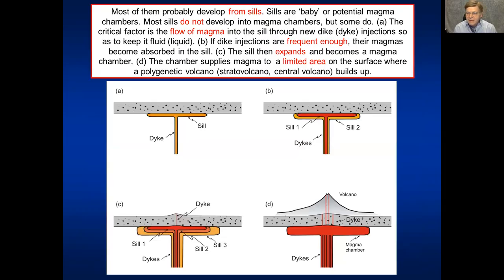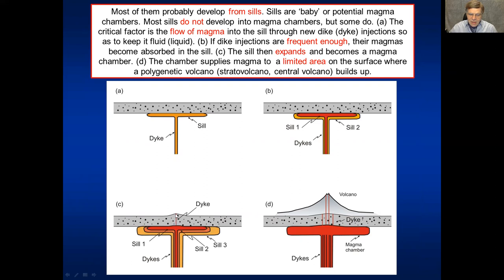I think most of them form from sills. Sills are sort of baby or potential shallow magma chambers. Most sills of course do not become magma chambers, but quite many do, and the critical factor is the flow of magma into the sill once it has been emplaced through new dike injections. If the sill then receives magma from new dike injections it can grow and expand into a real shallow magma chamber, which subsequently starts to inject dikes and probably inclined sheets that bring magma to a limited surface area. This limited surface area becomes the polygenetic volcano — the stratovolcano, composite volcano, central volcano — at the surface.